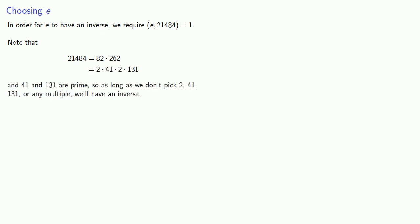Now to choose that encryption exponent, it's important to remember that in order for e to have an inverse, we require that the greatest common divisor of e and phi of n, 21484, has to be equal to 1. So here it's useful to remember that we found 21484 by multiplying 82 by 262. And both 82 and 262 have a factor of 2, and both 41 and 131 are prime. So as long as we don't pick 2, 41, 131, or any multiple, we'll have an inverse.